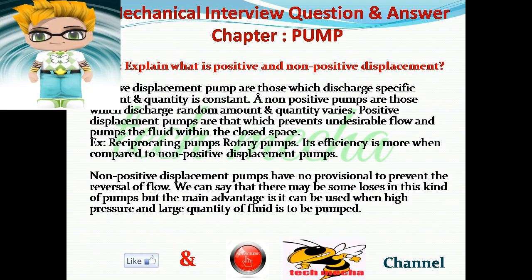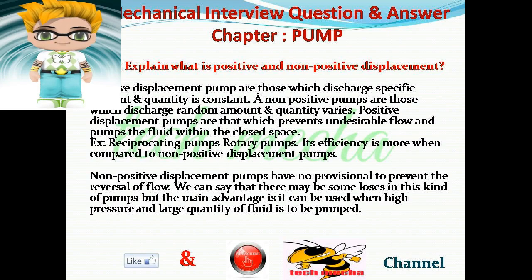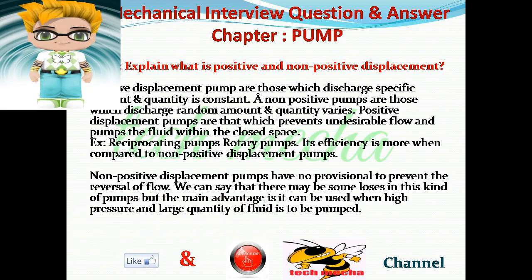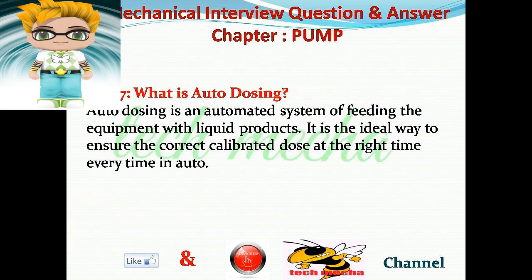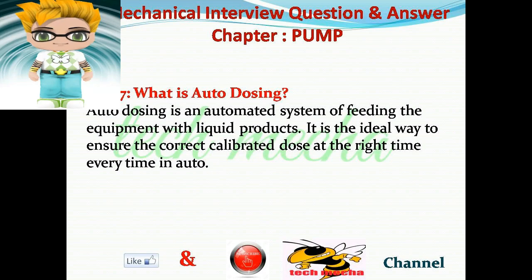Non-positive displacement pumps have no provision to prevent the reversal of flow. There may be some losses in this kind of pump, but the main advantage is it can be used when high pressure and large quantity of fluid is to be pumped. Question number 7: What is auto dosing? Answer: Auto dosing is an automated system of feeding equipment with liquid products. It is the ideal way to ensure the correct calibrated dose at the right time, every time.